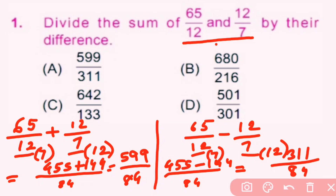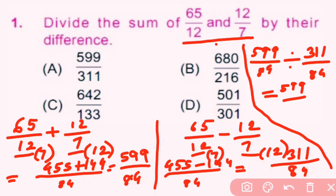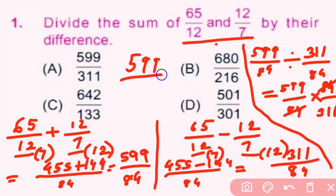The question asks us to divide the sum by the difference. Sum is 599/84 divided by difference 311/84. We take the reciprocal: 599/84 × 84/311. The 84s cancel, giving us 599/311. So option A is correct.